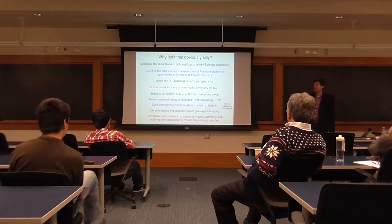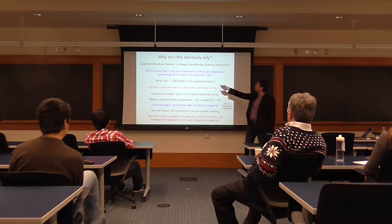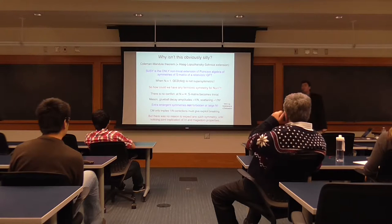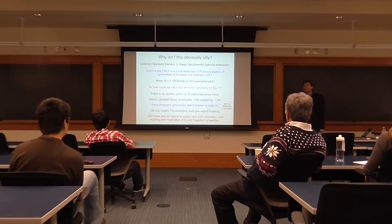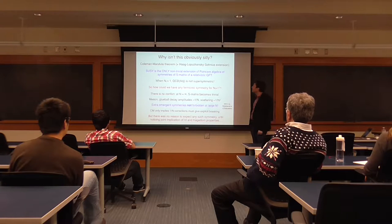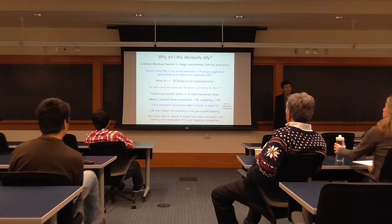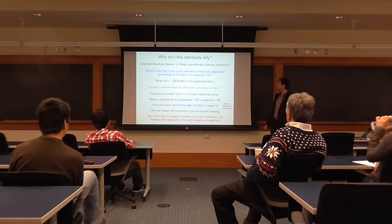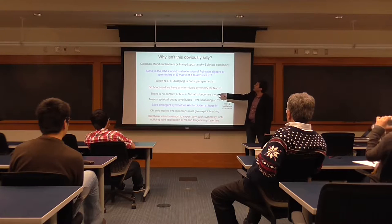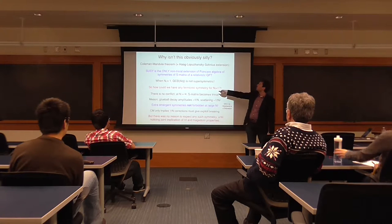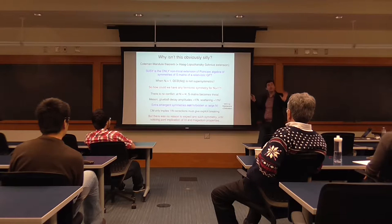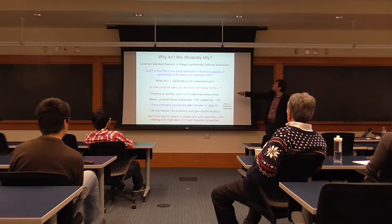Before I continue, there's probably a question: why isn't this ridiculous? After all, we all know from the Coleman-Mandula theorem and its extension, the Haag-Łopuszański-Sohnius theorem, that SUSY is the only non-trivial extension of the Poincaré algebra of symmetries for the S-matrix of a relativistic quantum field theory. So naively, if you take a theory that has more fermions than bosons, you can't have SUSY. How could anything have a symmetry which goes beyond supersymmetry in view of this theorem?